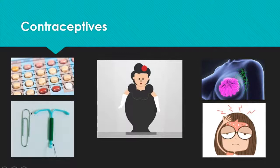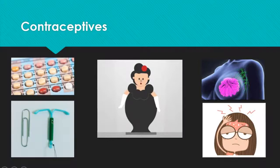Down here you can see an IUD, which can be inserted into the uterus. The string hangs out of the cervix so it can be extracted when the time comes. This is the Mirena. There's also a copper IUD, which irritates the lining of the endometrium. The downside of the copper IUD is heavy bleeding. Finally, if you have a patient who needs an emergency contraceptive, the absolute most effective technique is the copper IUD.